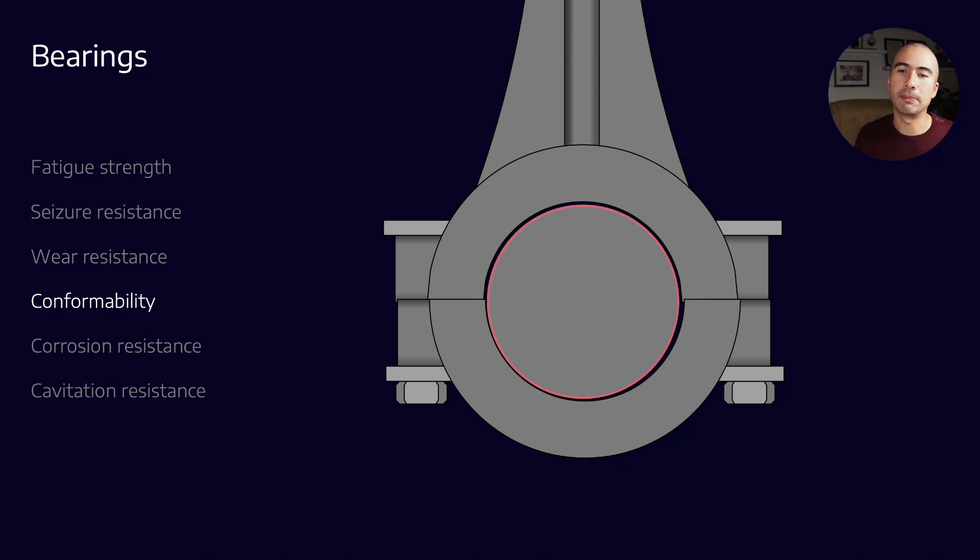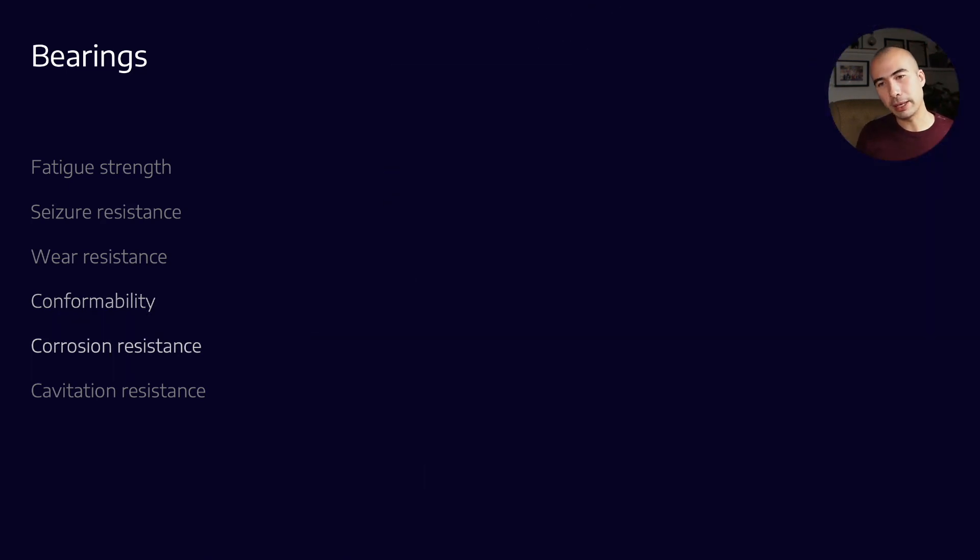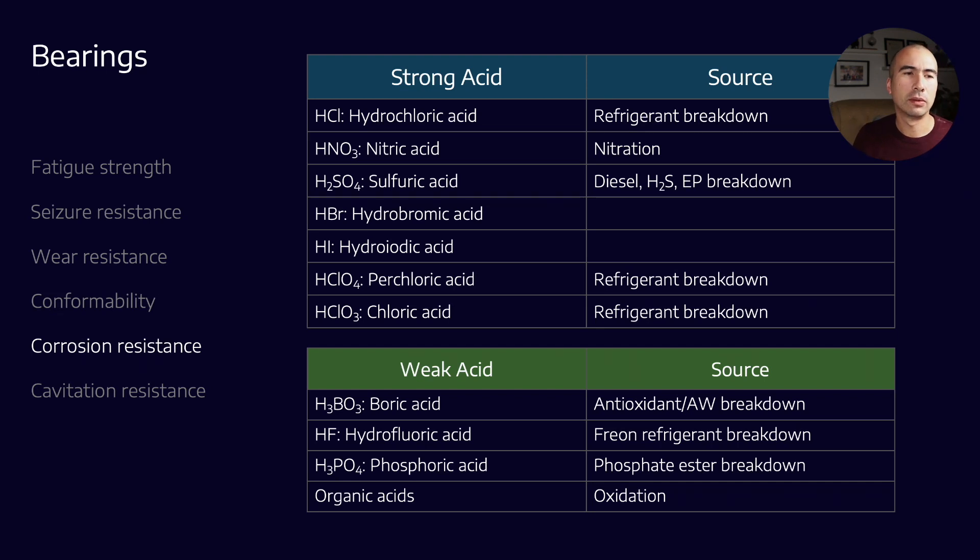One other thing that we want is corrosion resistance. As we talked about, engines are quite dirty environments. There are numerous sources of all kinds of different contaminants. When we talk about the compression aspect of it—maybe we're talking about gas compression or refrigeration compression or something like that—now we're introducing all kinds of other contaminants that could potentially get into our crankcase. In an engine, which I think is the application people will be most familiar with, you get breakdown of additives that can create acids, breakdown of the base oil can create acids, and contaminants in the fuel.